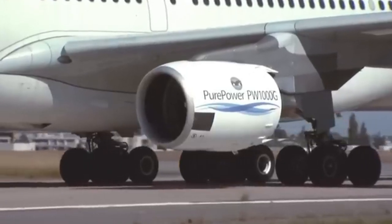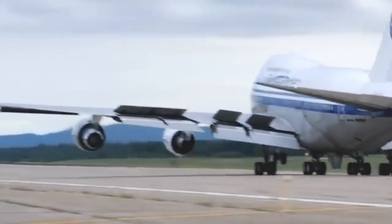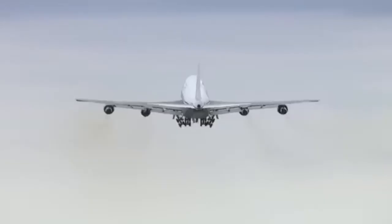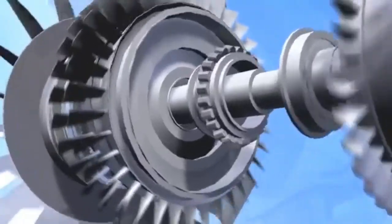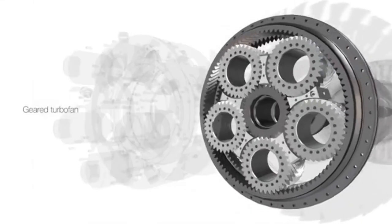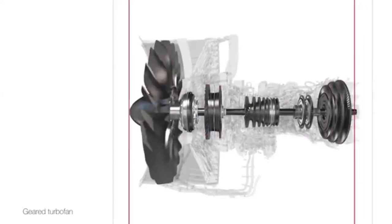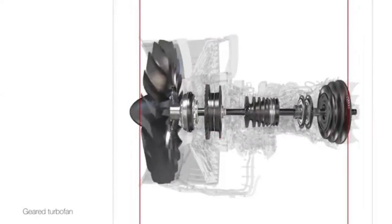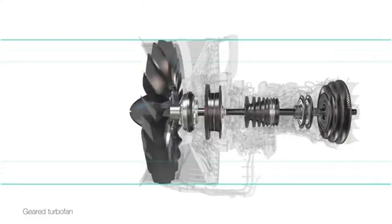Third on our list is the Pratt & Whitney PW1000G, also known as the geared turbofan. This engine powers a variety of aircraft, including the Airbus A220 and Embraer E-Jets E2. The PW1000G's standout feature is its gear system that reduces fuel consumption and noise. The geared turbofan technology allows the fan and the low-pressure compressor to operate at different speeds, optimizing efficiency and performance. This design significantly cuts down on fuel burn and noise, making it a popular choice for regional and short-haul flights.